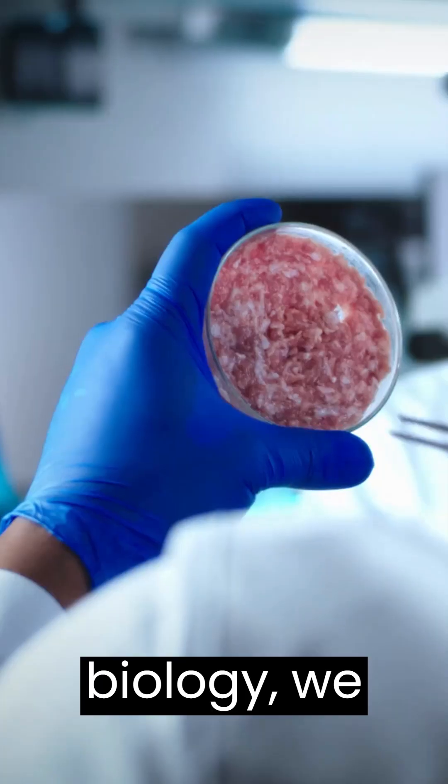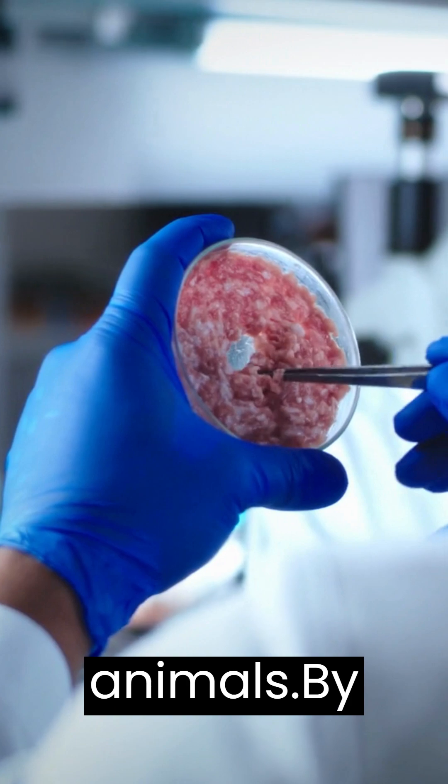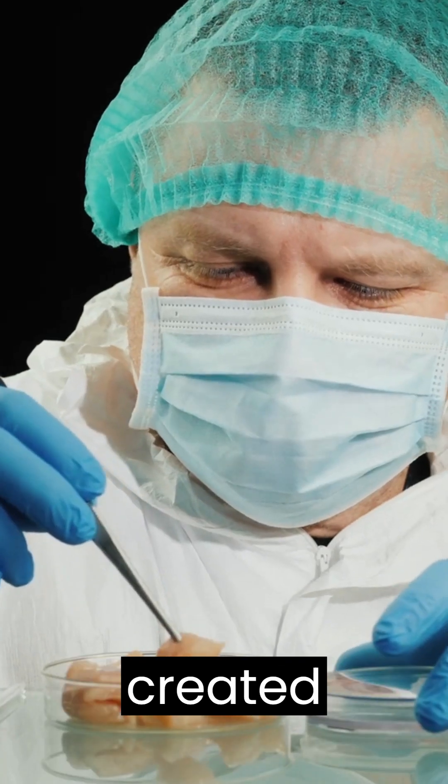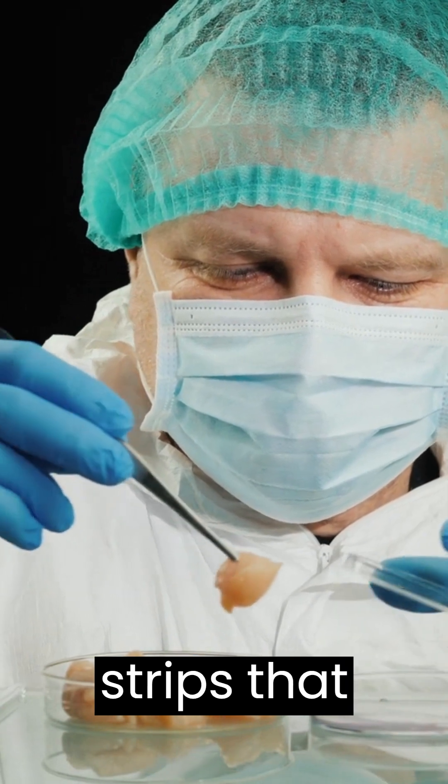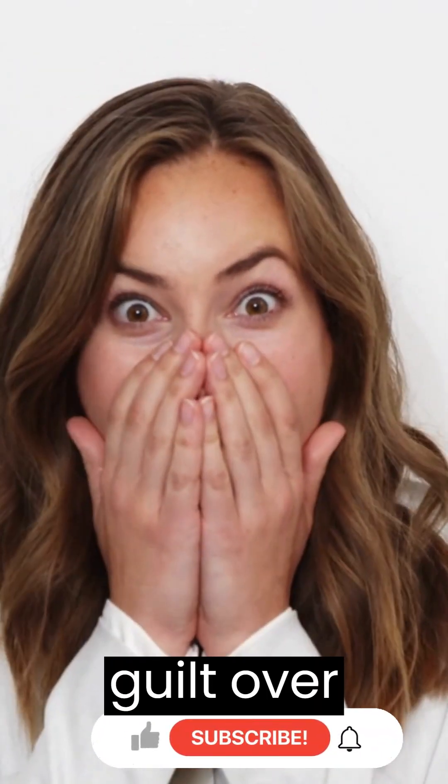Thanks to synthetic biology, we may soon be able to produce meat without harming animals. By growing muscle tissue in a lab, researchers have already created meatballs and chicken strips that are biologically identical to the real thing. No more guilt over eating meat.